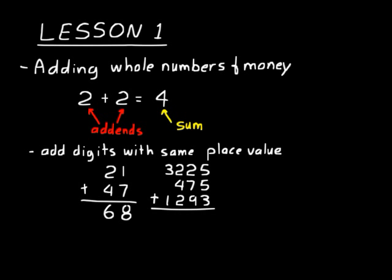Let's start on the right: 5 plus 5 plus 3. 5 plus 5 is 10, plus 3 is 13. Bring down 3, carry 1 to the tens column. 2 plus 1 is 3, plus 7 is 10, plus 9 is 19. Bring down 9, carry 1. 1 plus 2 is 3, plus 4 is 7, plus 2 is 9. In the final column, we have 3 plus 1 is 4. So 4993 is our answer.